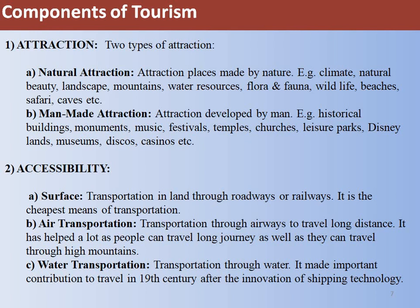The next component is Accessibility — how we move from one place to another, which is important for tourism growth. If a tourism place is not accessible, tourism cannot improve. Accessibility includes three types: surface travel such as roadways and railways, which is the cheapest means; air transportation for long-distance travel; and water transportation, which continues to evolve through continuous innovation in shipping technology.